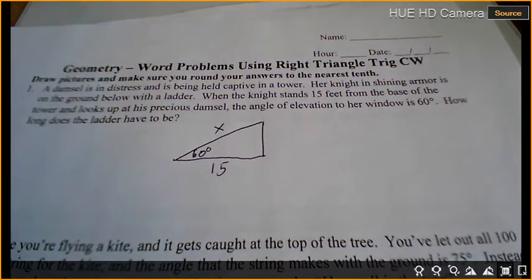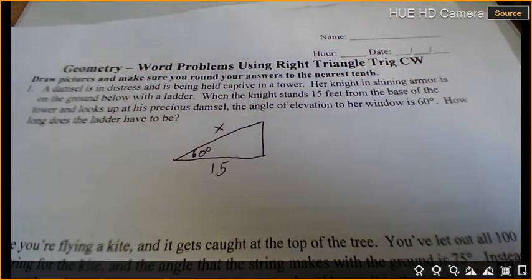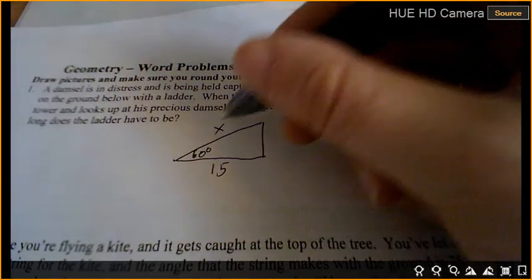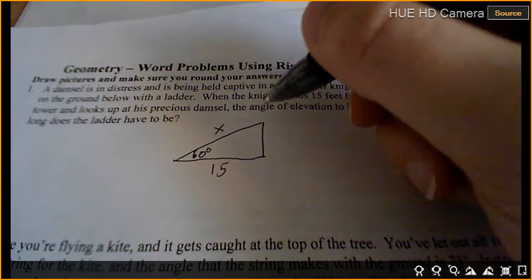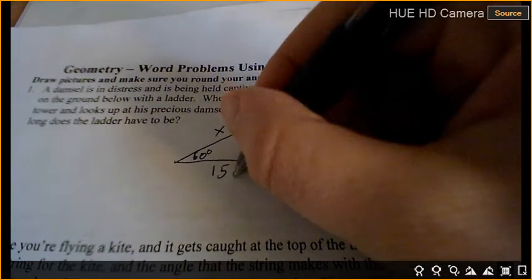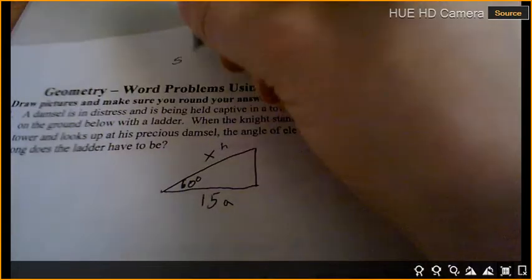So the ladder is hypotenuse, adjacent, or opposite? What's x? Hypotenuse. So 15 is the? Adjacent. So which trig function are we going to use? I like to write it on the top of my paper.